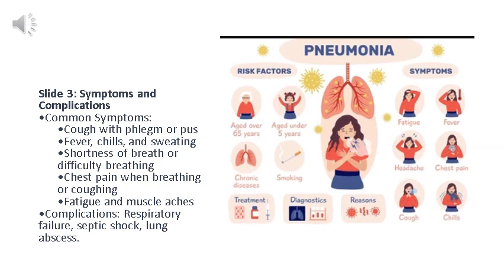Pneumonia manifests through a spectrum of distressing symptoms. These include a persistent cough accompanied by phlegm or pus, high fever often accompanied by chills and sweating, breathing difficulties causing shortness of breath, chest pain when coughing or breathing, and accompanying fatigue with muscle aches. Recognizing these indicators is pivotal for timely intervention and effective treatment. Moreover, beyond the observable symptoms, pneumonia harbors potentially grave complications.